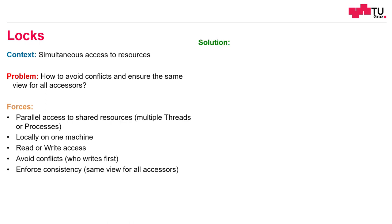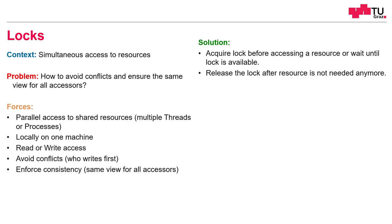The solution is to acquire a lock before accessing a resource, or wait until this lock is available. Only one thread can acquire a lock at the same time, and after we are done, we release the lock. It is important to use a lock which is synchronized and atomic to the client, so acquisition and release should be atomic operations.